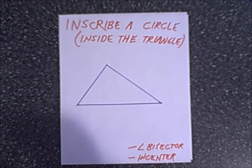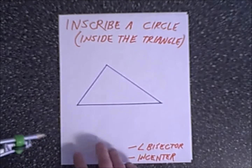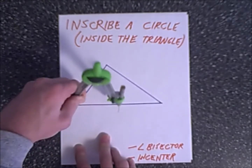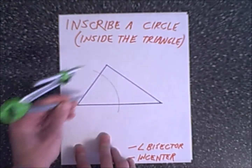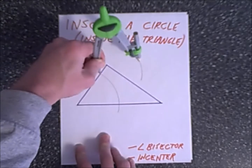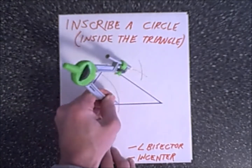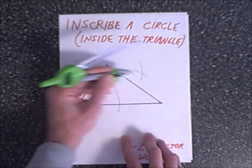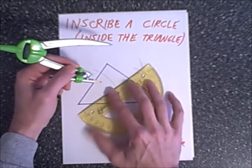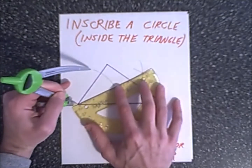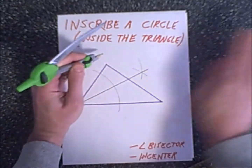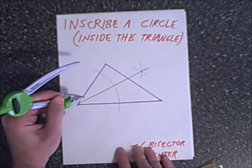We are going to construct an angle bisector. To do that, you start at the vertex and sweep an arc through the two sides. That gives us two equidistant segments. Then from each of these intersecting points, we draw an arc up here and from this one an arc up here. Therefore, we have congruent segments and congruent distances. From that intersecting point, we construct a line segment. So we have our first angle bisector right here — these segments are congruent.